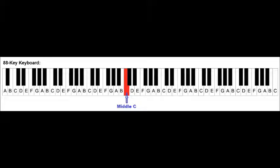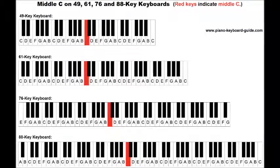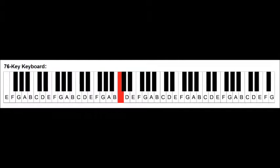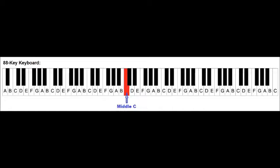One very important note that you should know as a beginner is middle C. Middle C is the starting note for many of the songs you will learn to play as a beginner. As the name suggests, this note is located in the middle or center of your piano keyboard — not exactly in the center, but it is the centermost key. Here's middle C on a 61-key keyboard, on a 76-key keyboard, and on an 88-key keyboard or piano. On an 88-key piano, starting from the lowest note and moving higher, middle C is the fourth C.